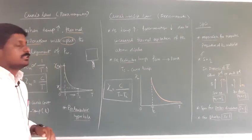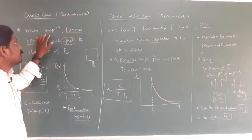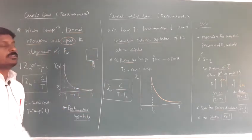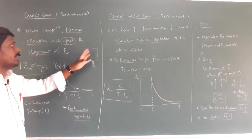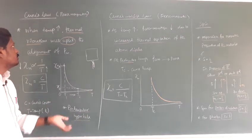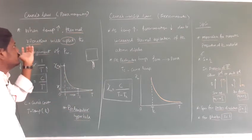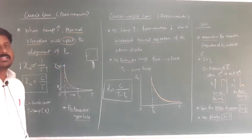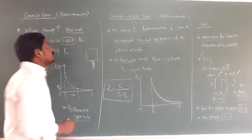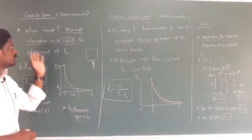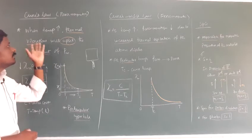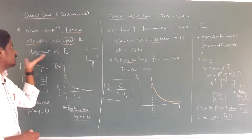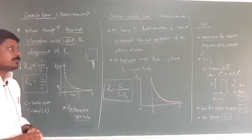Curie's law applies to paramagnetic materials. If temperature is increased — if we are heating the paramagnetic material — the magnetic moment value decreases. This is because thermal vibrations produced due to the temperature will upset the alignment of magnetic dipole moment.